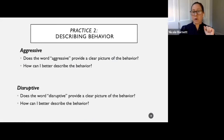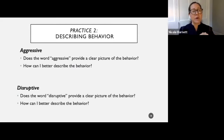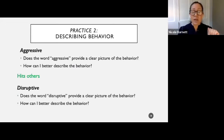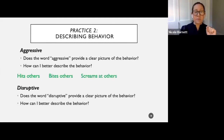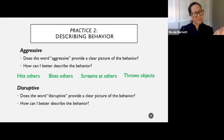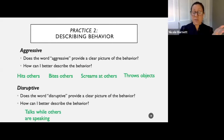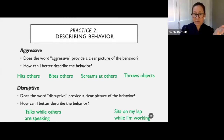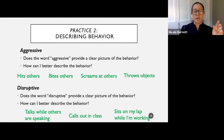Aggressive is a word we hear very often with our kids, but it's a very vague term. We have to think of other ways to describe the behavior. Specific examples include: hits others, bites others, screams at others, throws objects. Disruptive is also a pretty vague term. It could mean talks while others are speaking, sits on my lap while I'm working, or calls out in class — all disruptive behaviors that look very different.